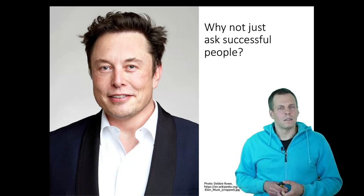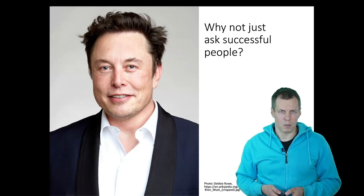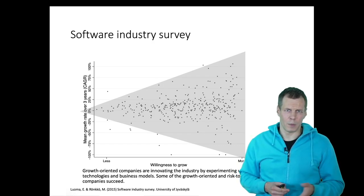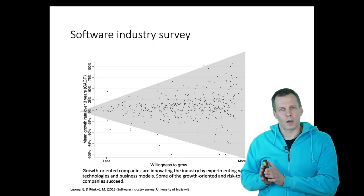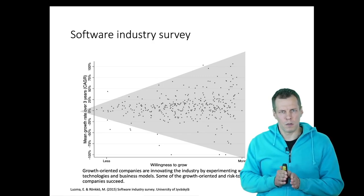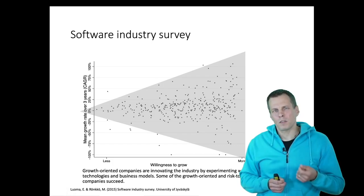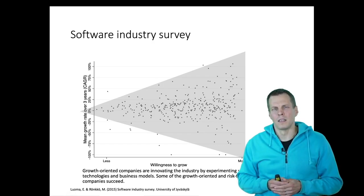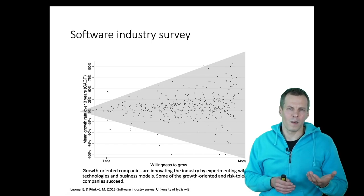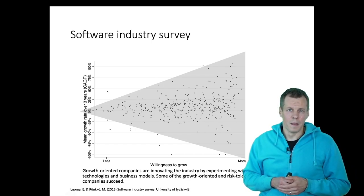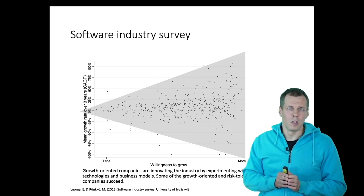The third reason is that the causal effects of what we do on any outcome vary between people and organizations. Here's data from a study I did with Eetu Luoma — we surveyed Finnish companies over a couple of years to understand if ambition and growth orientation affect company growth rate. The background was that Finnish media was arguing that Finnish companies were not sufficiently growth-oriented — once entrepreneurs reach a good standard of living, they stop wanting to grow — and that more growth-oriented companies would be better for the economy.